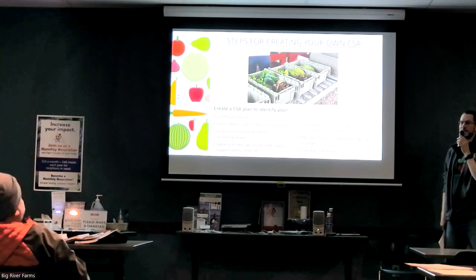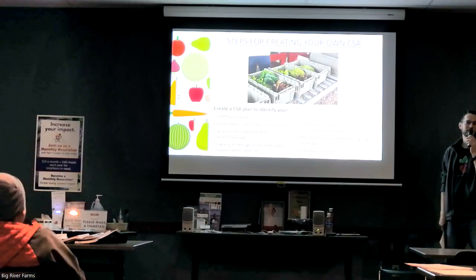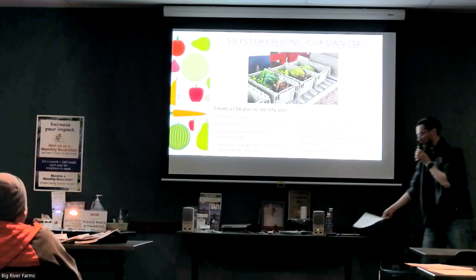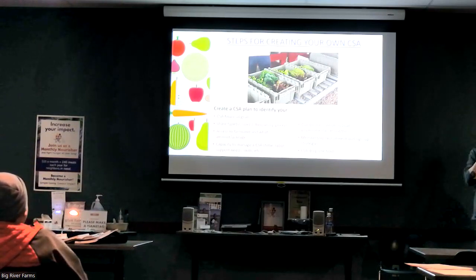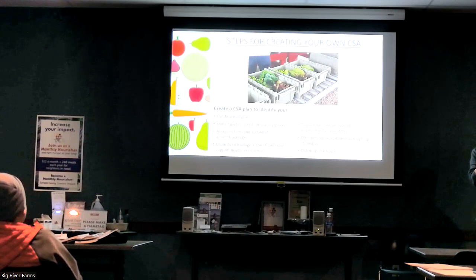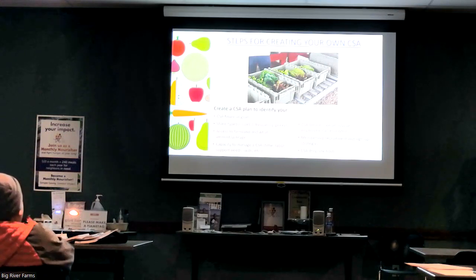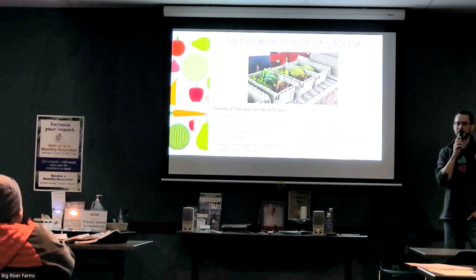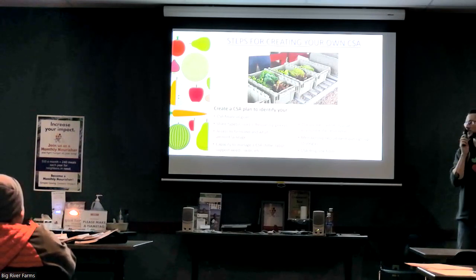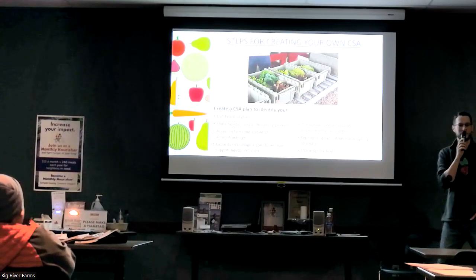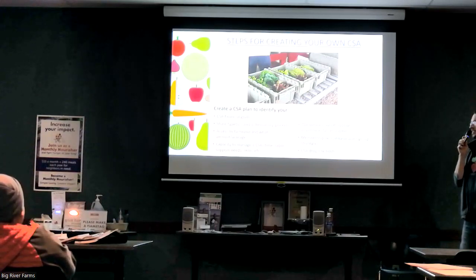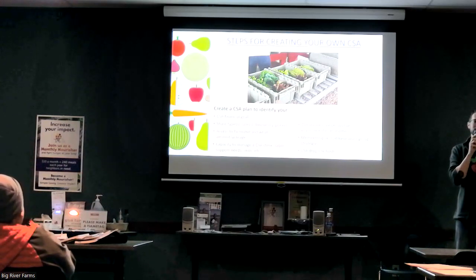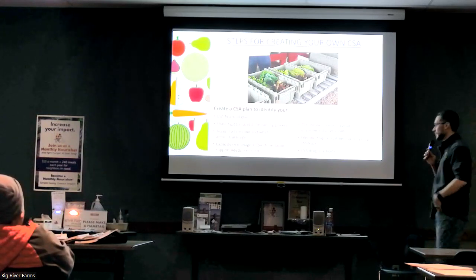It's nice to build some flexibility into your share sizes — for example, seven to ten items in a small share gives you room to adjust if there's crop loss or things aren't ready to harvest as planned. One week you might have six or seven items and the next week ten or eleven. This also sets the right expectation with members that farming is variable, with lots of things that can change what's ready to harvest in real time.